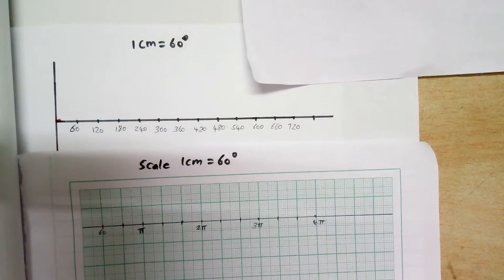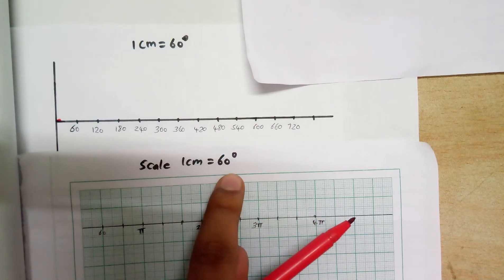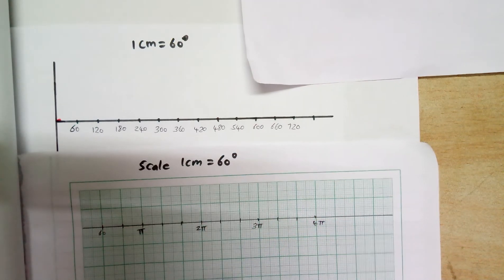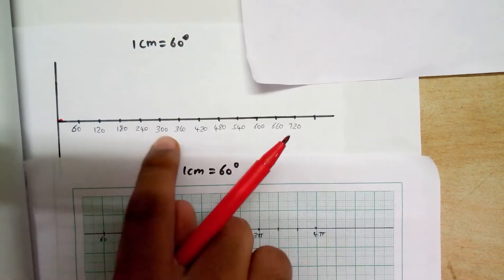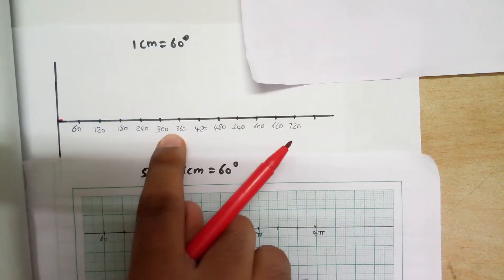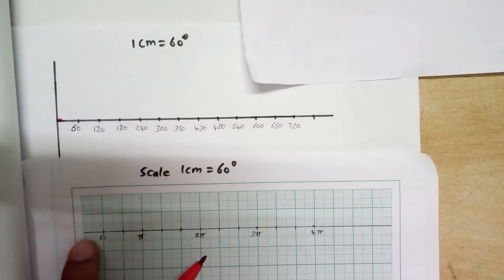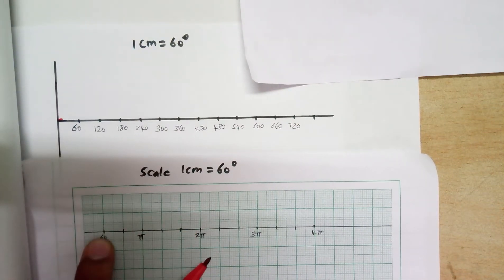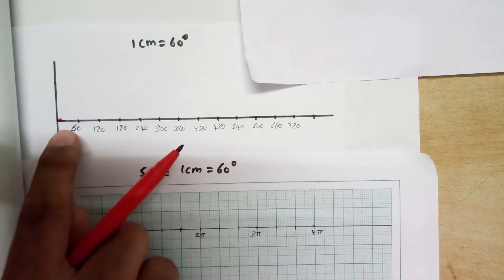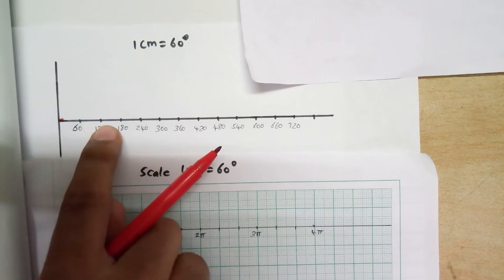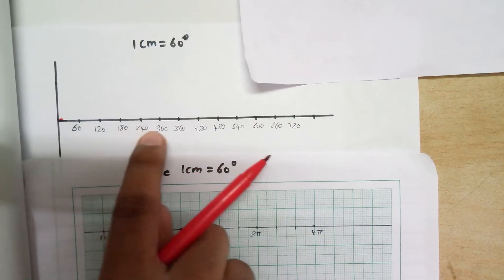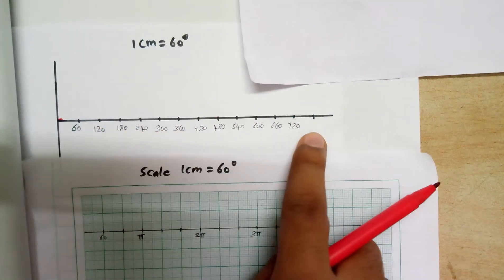Today I am going to show you how to draw a three-phase wave in graph paper. First of all, select the scale. Scale: 1 cm equal to 60 degrees. I have drawn on a white sheet of paper to make more clarity. So 1 cm equal to 60 degrees, 2 cm equal to 120 degrees, and continue to 720 degrees.